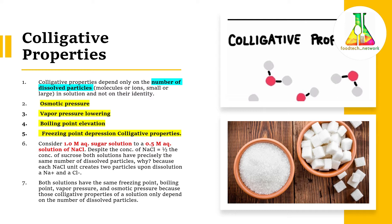These four colligative properties depend only on the number of solute particles. It doesn't matter whether you have one gram of sugar, one gram of milk, or one gram of clay — it just depends on the number of solute particles. This is an interesting example: suppose you have two solutions, each with 100 ml of water, and you add to one a 1 molar sugar solution and to the other a 0.5 molar NaCl solution.